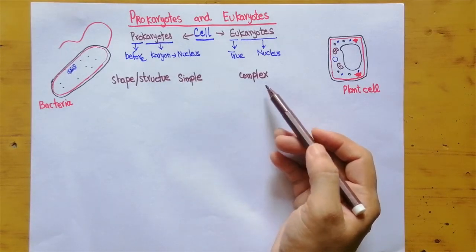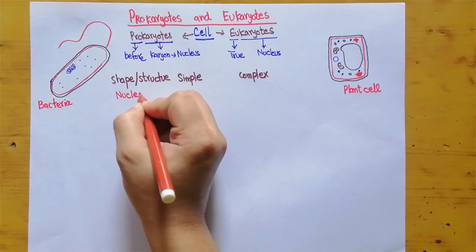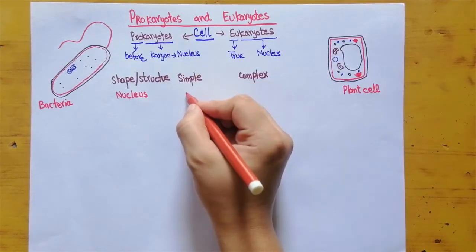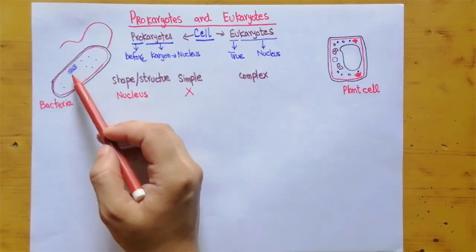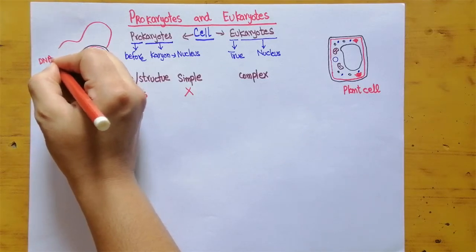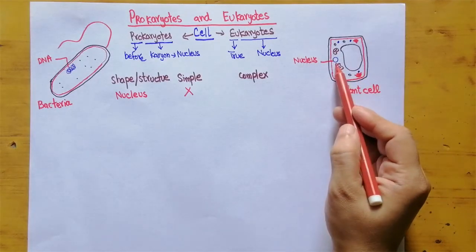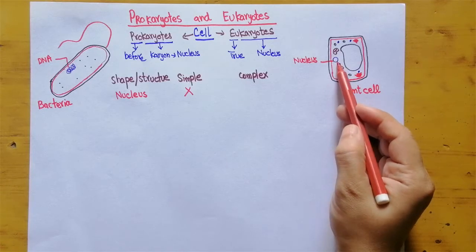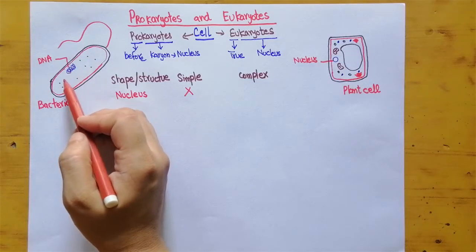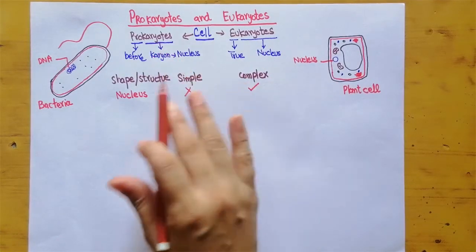Another key difference is the nucleus — in fact, it is the basis on which these two groups are divided. The nucleus is absent in prokaryotes, and their DNA, the hereditary material, just floats inside the cytoplasm. In eukaryotes, you can see the compact nucleus enclosed by a nuclear membrane, while in prokaryotes the DNA is simply floating in the cytoplasm.